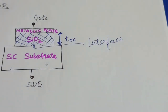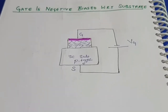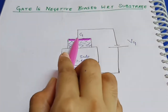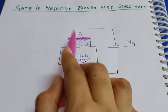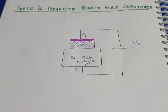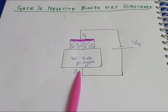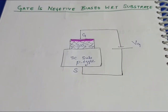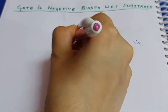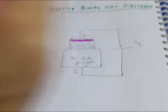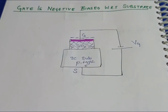Let's consider the MOS capacitor with a p-type substrate. In the first case, the gate is negatively biased with respect to the substrate. The negative terminal of the battery is connected to the gate terminal and the positive terminal is connected to the substrate.